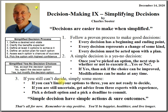Proposition 3: if you still can't decide, then simplify some more. If you can't limit your options to three, you're not ready to decide. If you're still uncertain, get advice from three experts with experience. Make sure you pick a default option and a deadline to commit — otherwise the decision keeps rolling downhill until it makes itself or is overcome by events. When the choice is not obvious, pick a seemingly good enough default option so you don't agonize. Most often the default option is to wait and see, keeping the status quo until you find a better option or implementation plan. Meanwhile, gather more information or seek expert assistance.